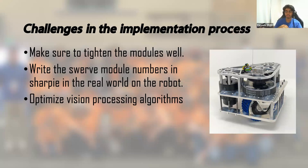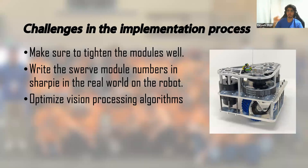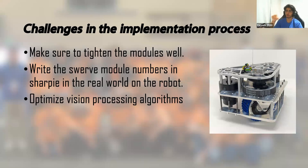One thing we messed up this year: 3061 follows the framework where you go top-left, top-right, bottom-left, bottom-right. But when we were configuring our swerve modules, we configured them top-left, top-right, bottom-right, bottom-left. So that changed around the 0, 1, 2, 3 pattern and made debugging awkward. What we did was write on the bottom of our robot in Sharpie which module number corresponded to each one. When the robot is upside down and you're debugging, labeling those modules in Sharpie or tape is really helpful.